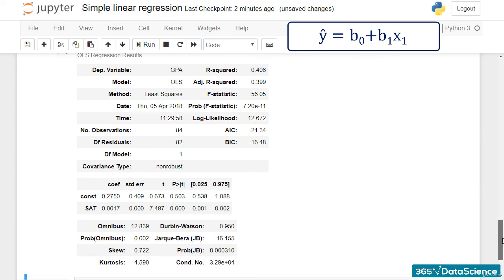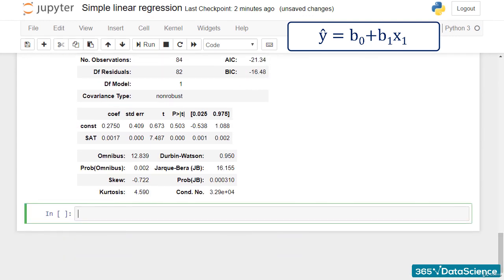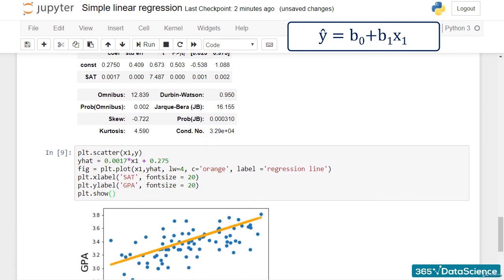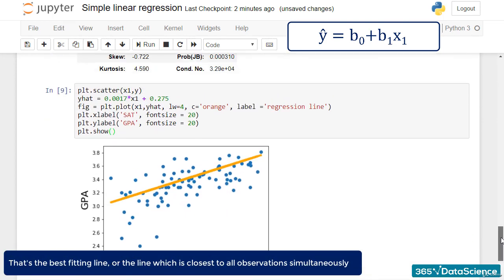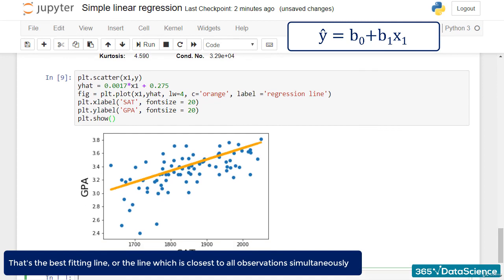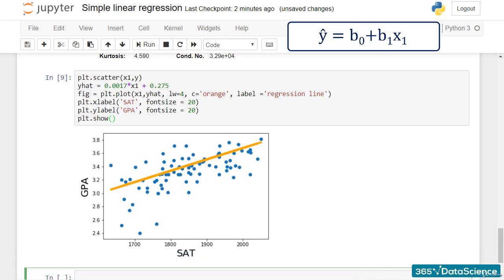Let's plot the regression line on the same scatter plot. That's the best-fitting line, or, in other words, the line which is closest to all observations simultaneously. So that's how you create a simple linear regression in Python. Pretty cool, right?